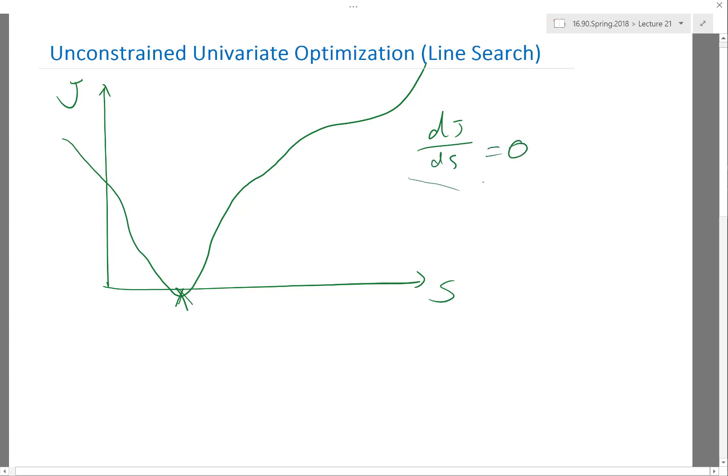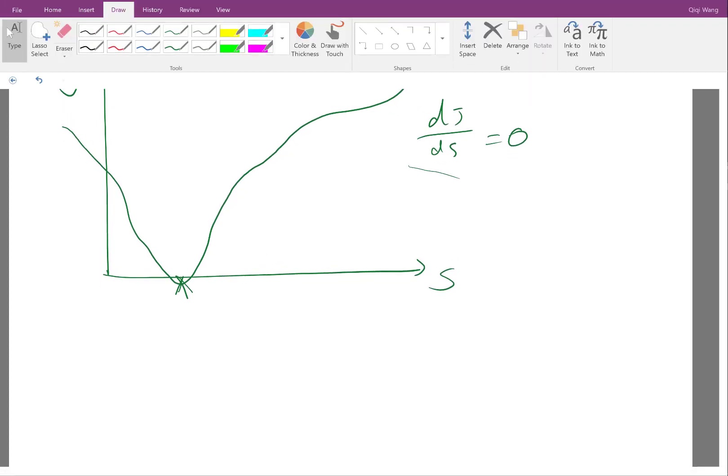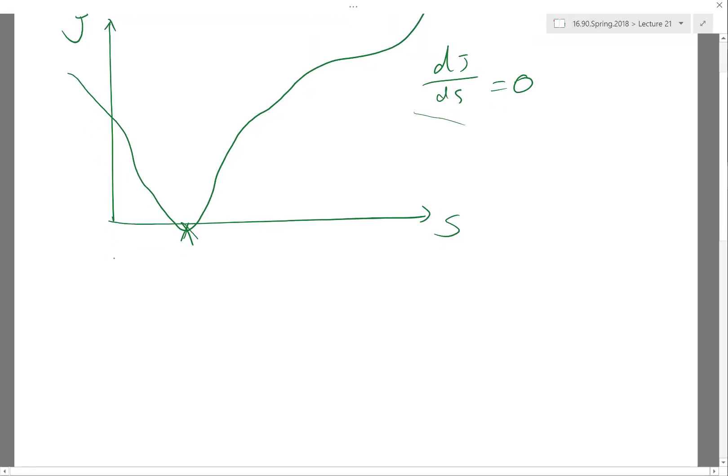If we assume we can evaluate dJ/dS, then the optimization problem becomes a root-finding problem. One of the best algorithms for root-finding is Newton-Raphson optimization. If we can translate this particular landscape into dJ/dS, what do we get?